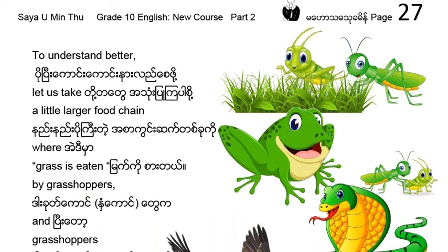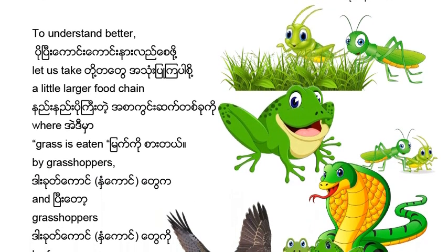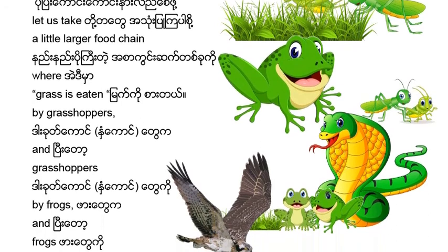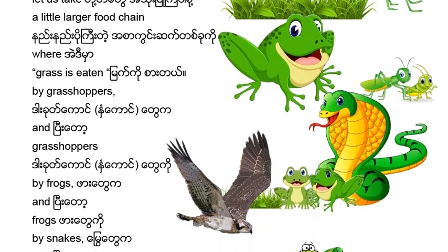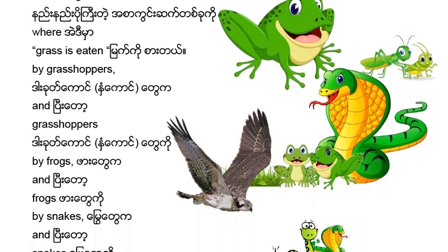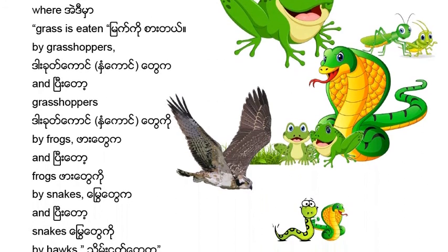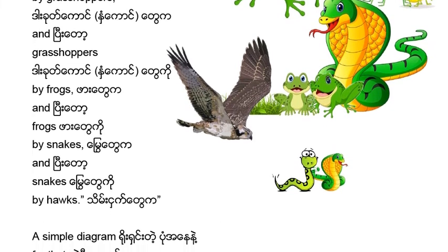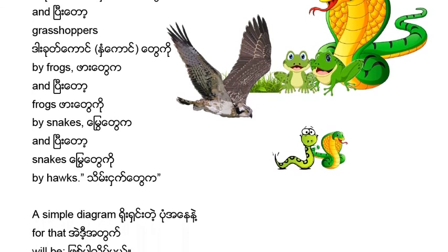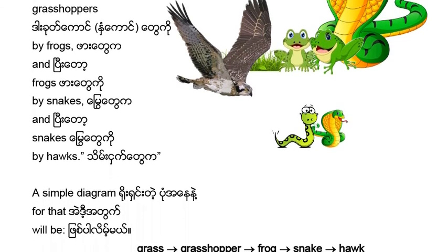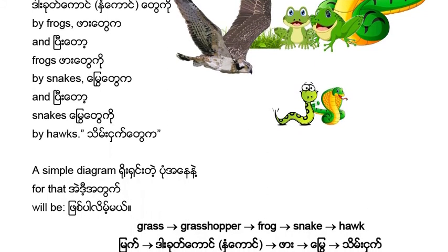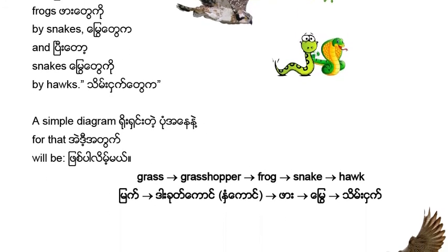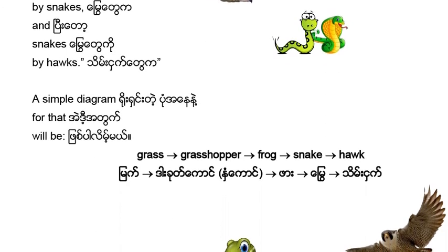To understand better, let us take a little larger food chain, where grass is eaten by grasshoppers, and grasshoppers by frogs, and frogs by snakes, and snakes by hawks. A simple diagram for that will be: grass → grasshopper → frog → snake → hawk.